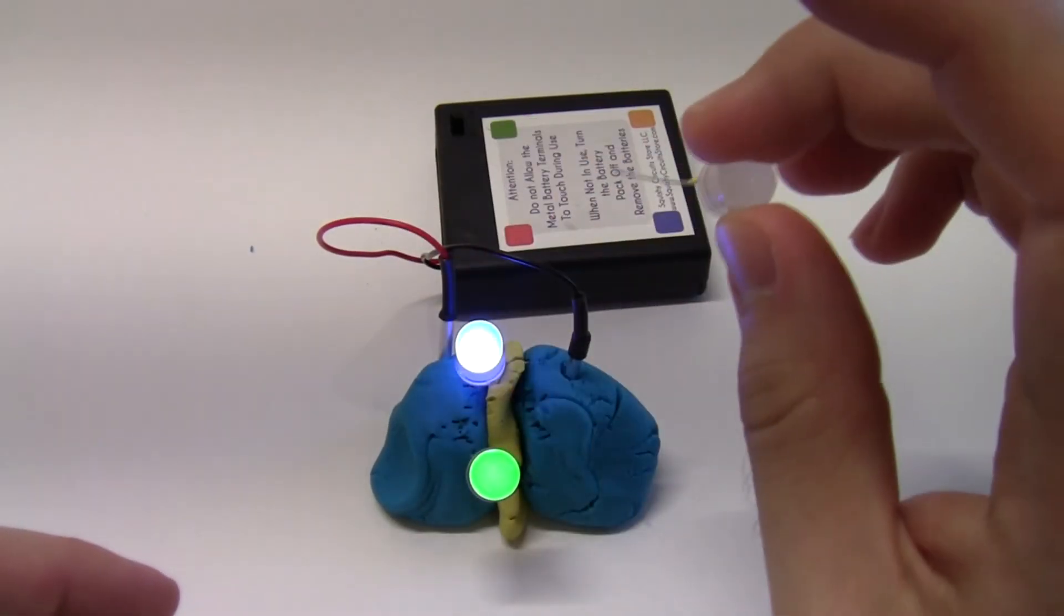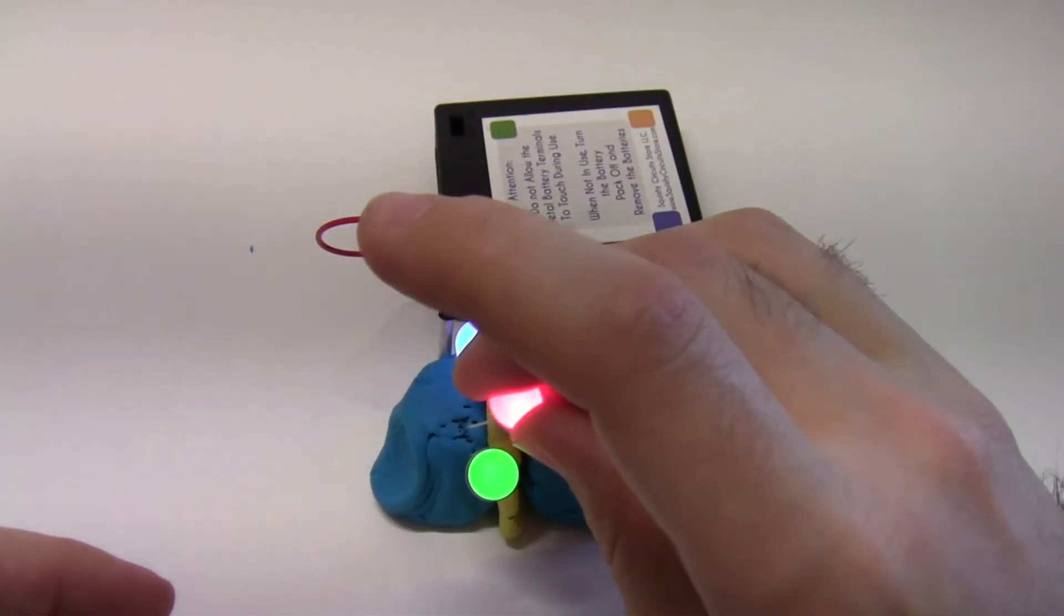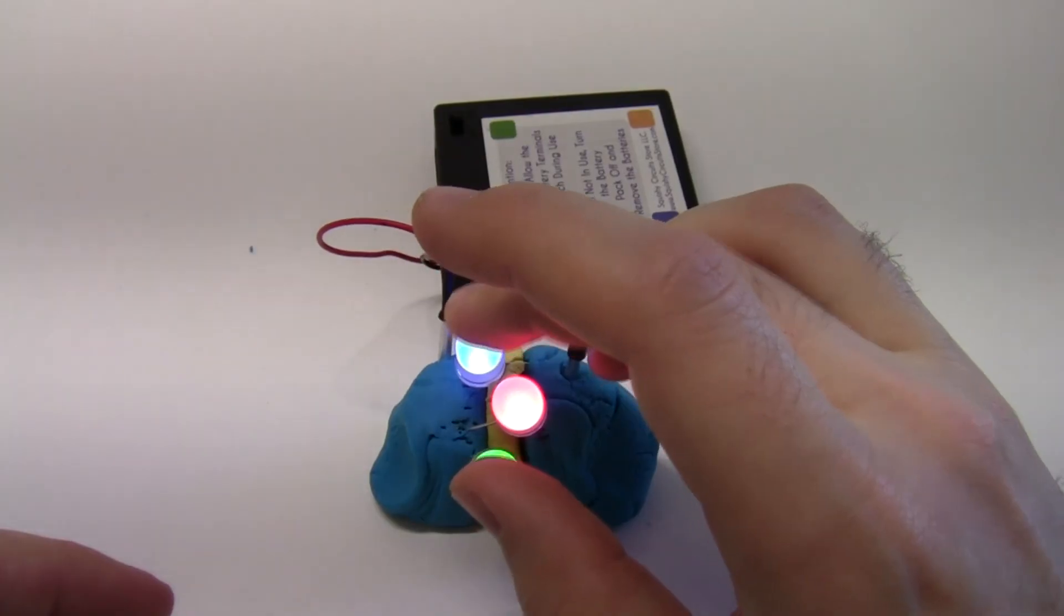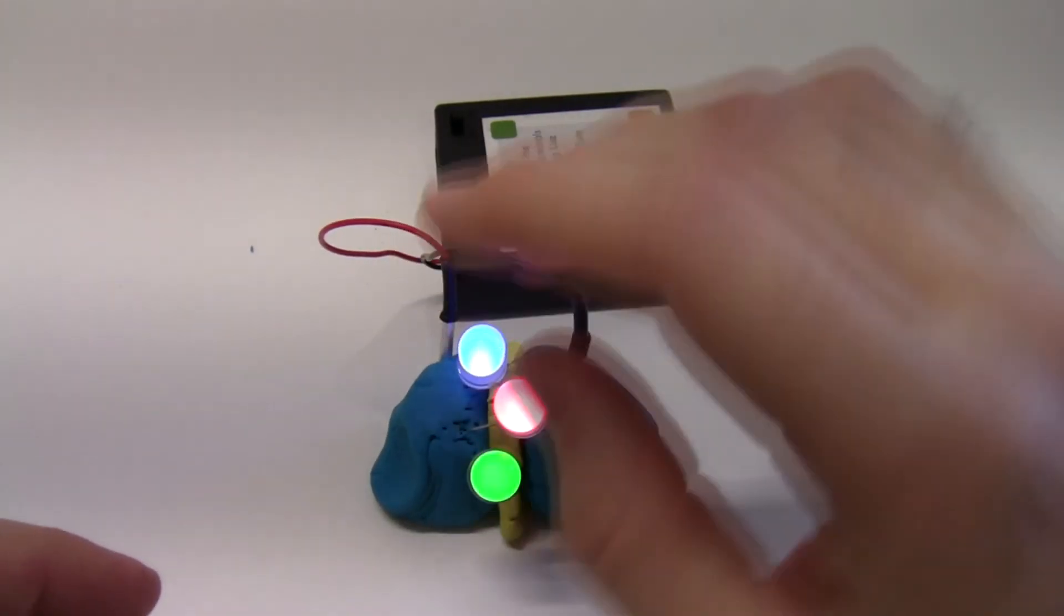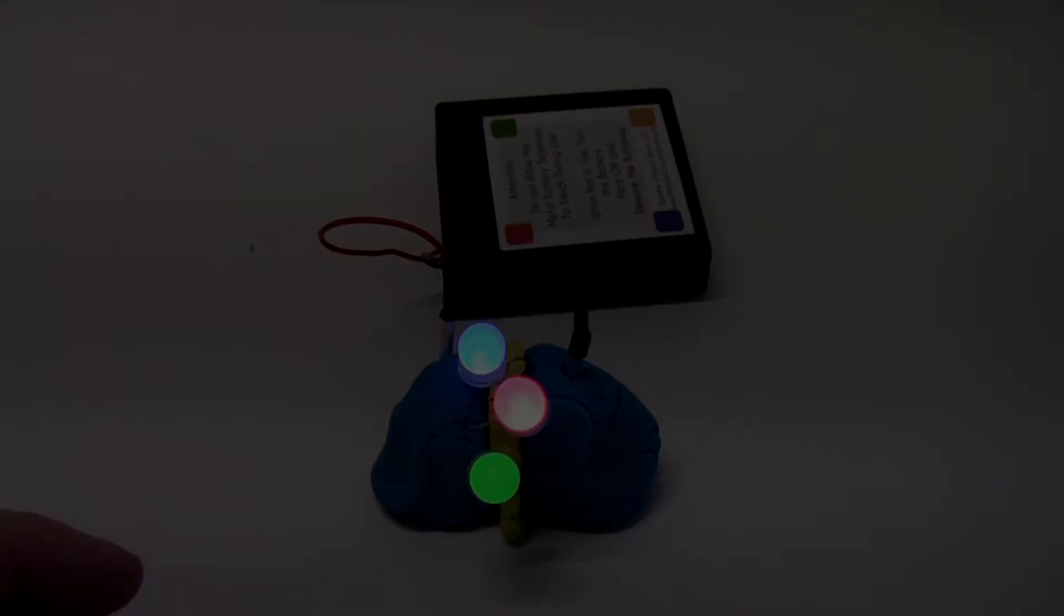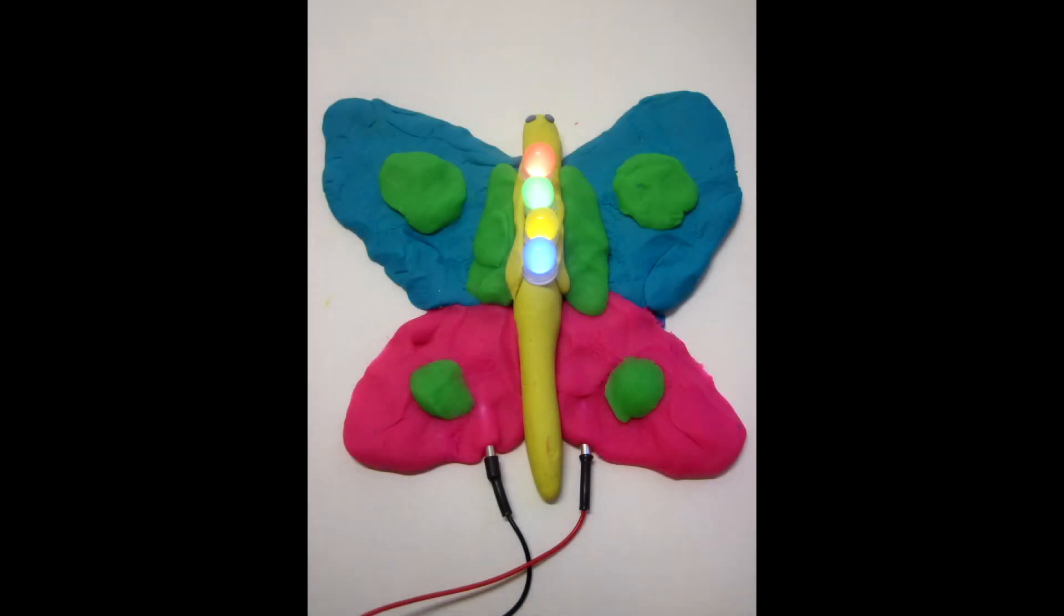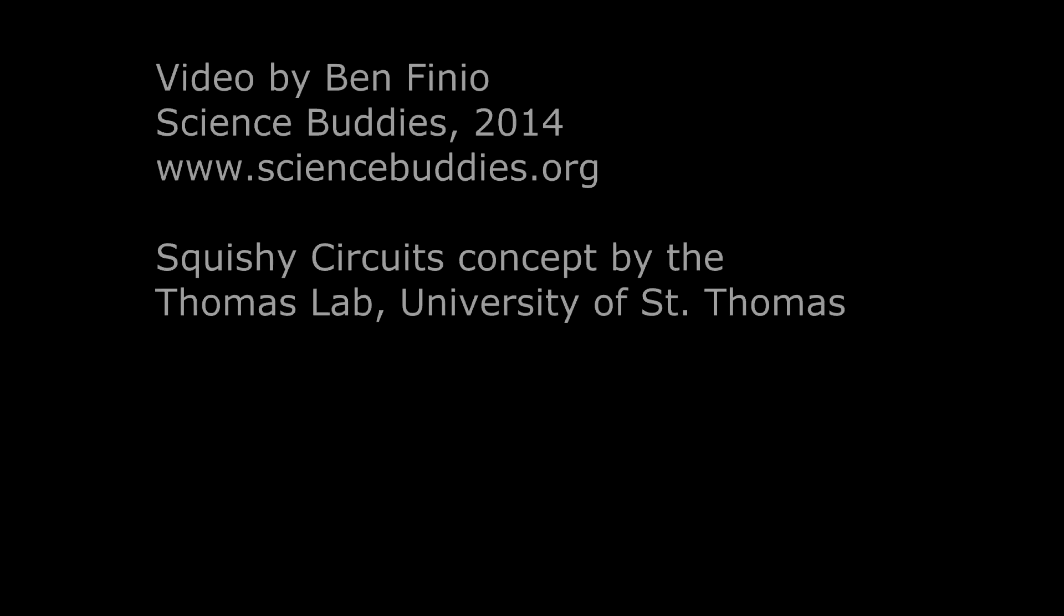So now you can experiment with this and see how many LEDs you can fit into your sculpture and how far apart you can make them. They don't have to be right next to each other like you see here. Once you understand the basics of squishy circuits, you should challenge yourself to come up with an even more creative sculpture. You can find the step-by-step written directions for this project in a link in the description of this YouTube video. You can also visit us at www.sciencebuddies.org for a library of over 1,000 free science and engineering project ideas.